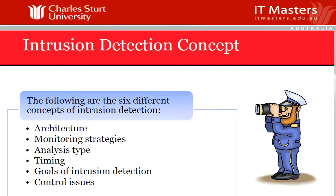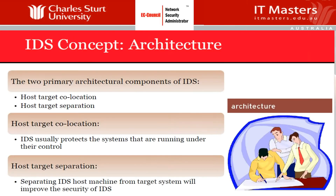You should have goals to protect your network by looking at attack patterns and controlling any possible issues. When it comes to architecture, you have two primary components. One is host-target collocation, which protects the systems running under its control — everything is connected and under their control. Two is host-target separation, where you separate your IDS host machine from the target system. This will improve the security of your IDS but it might add some complexity.